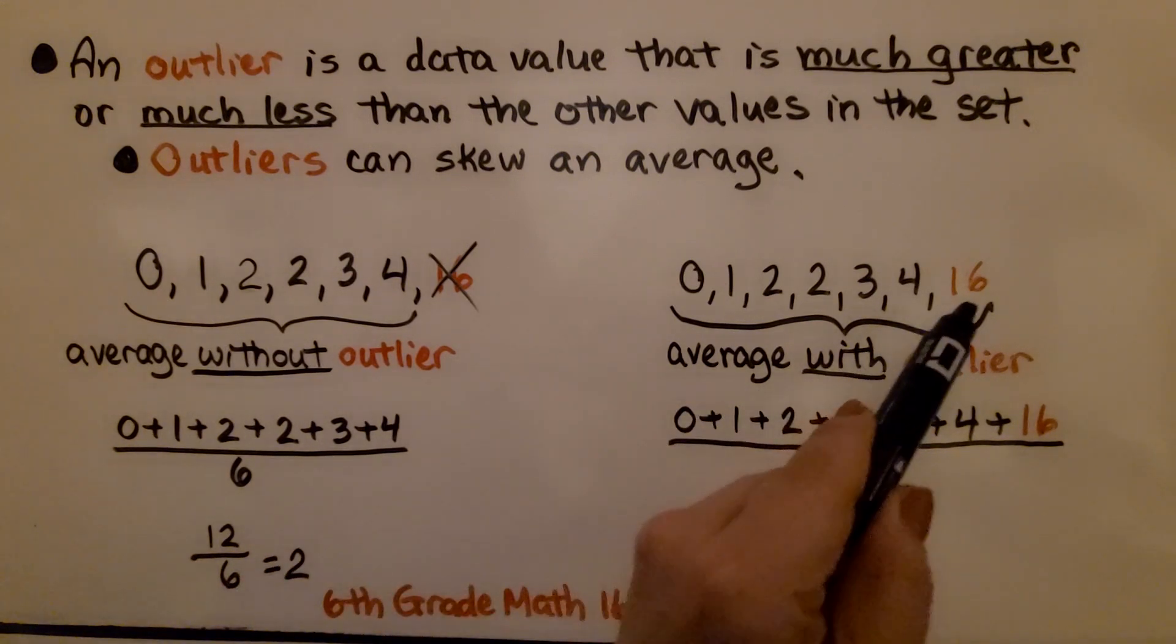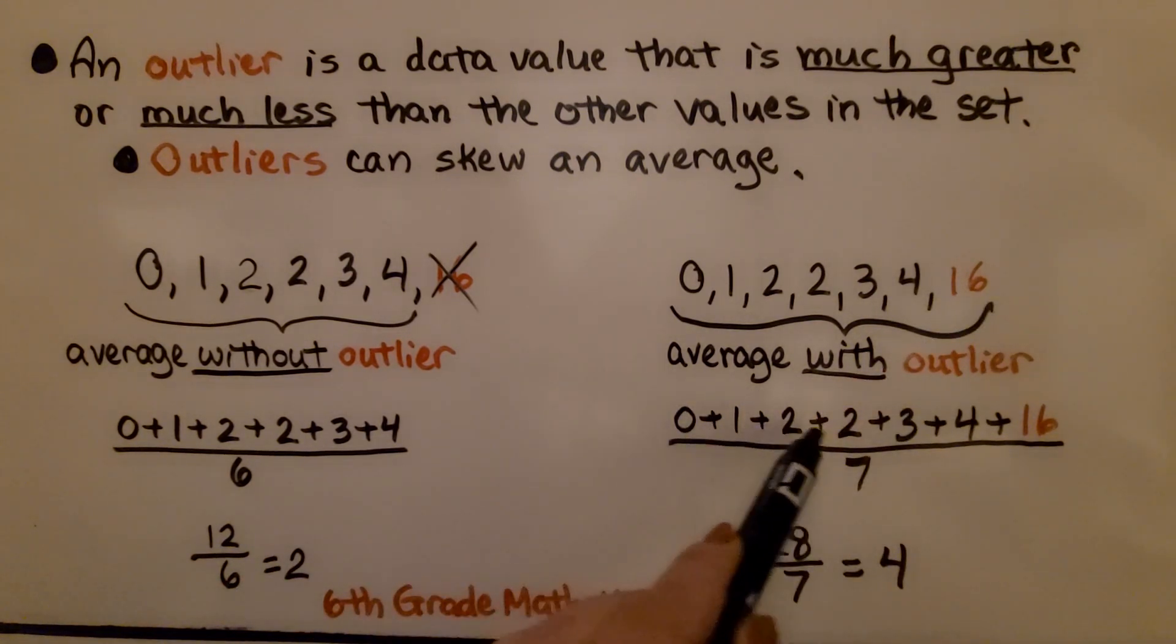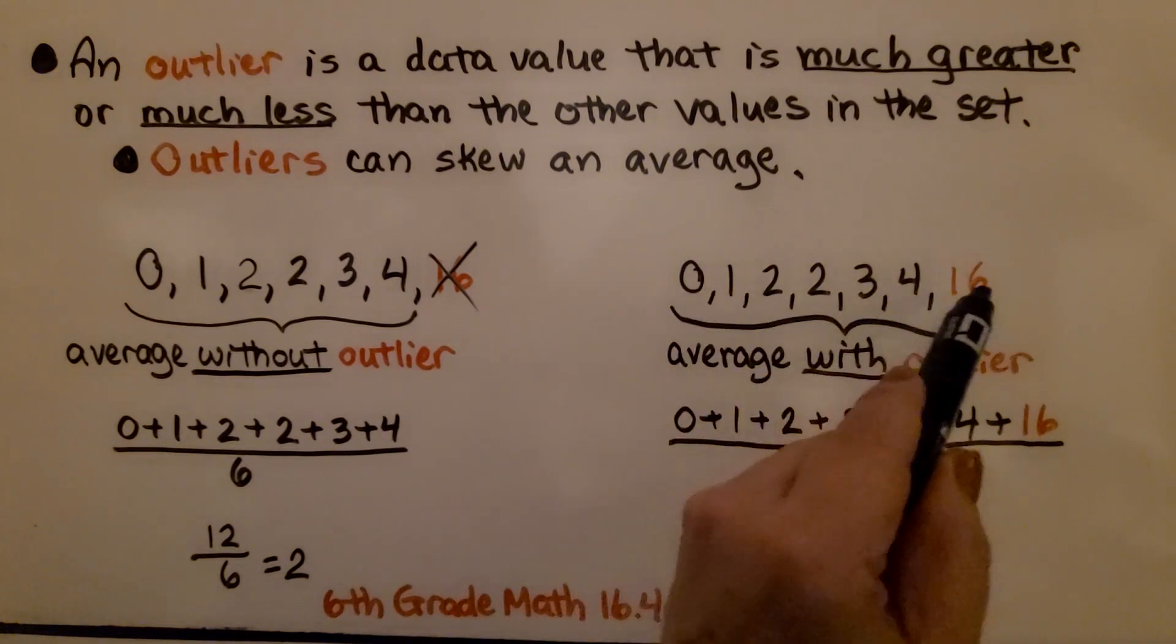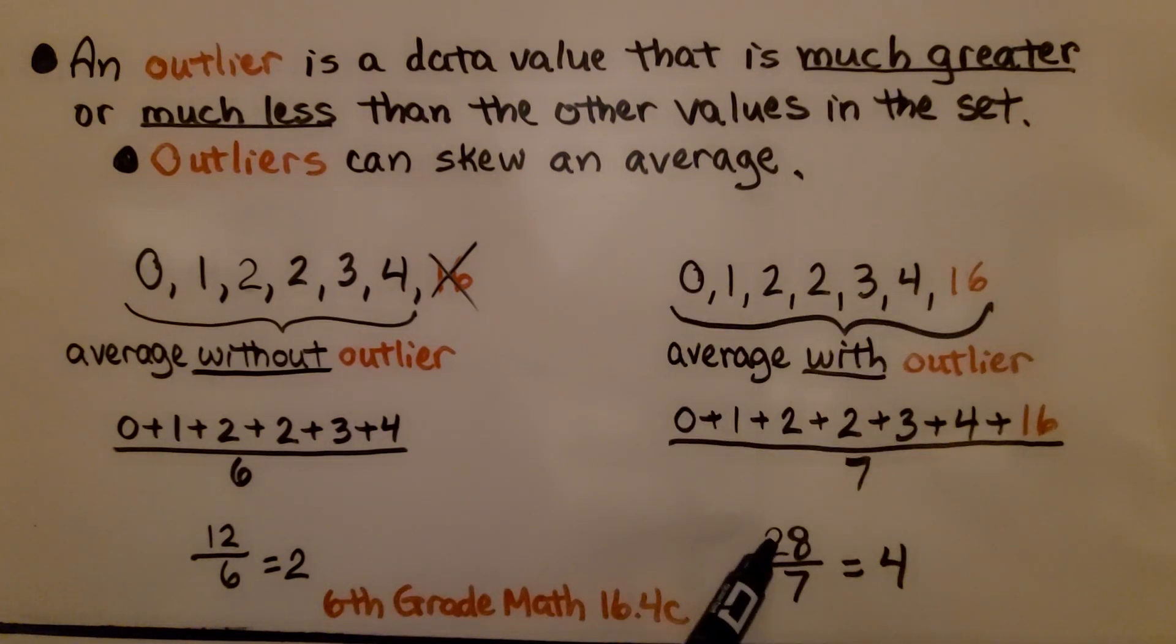If we include the outlier, now we're adding all of these digits and now we've got to divide it by seven because we've got seven data values. We're going to get 28 divided by seven. Our average is going to be four.